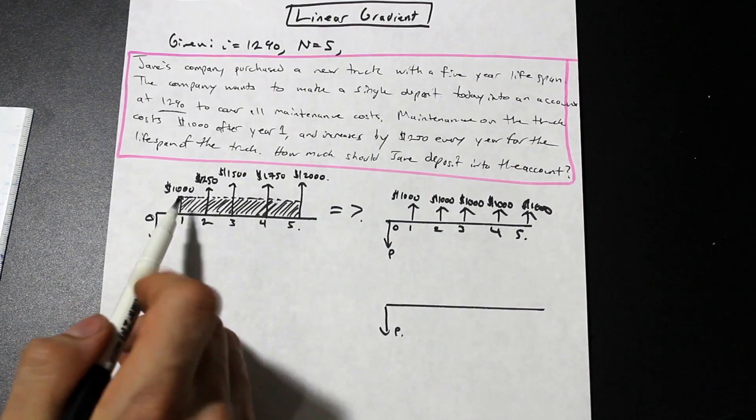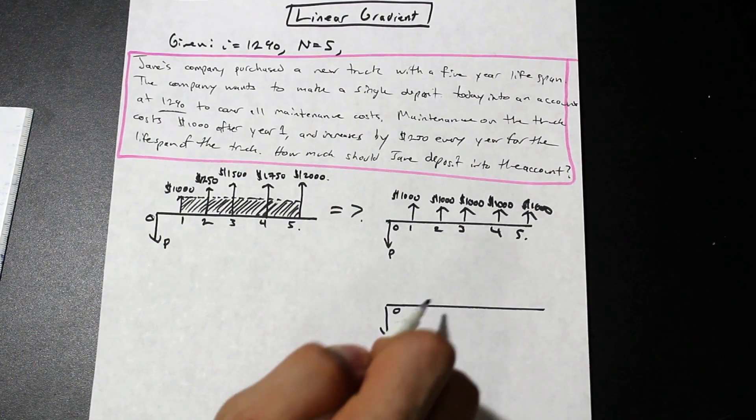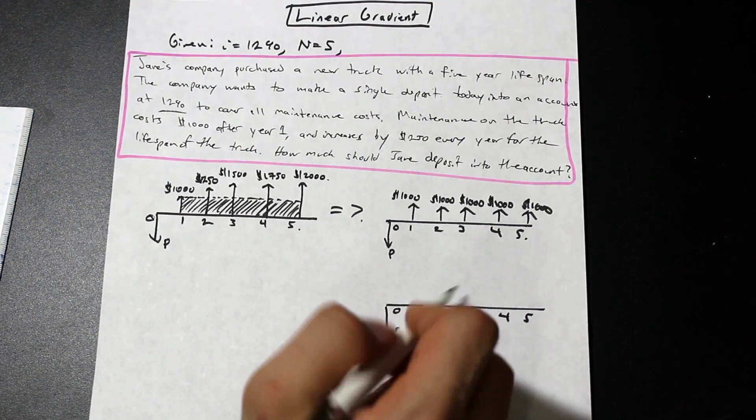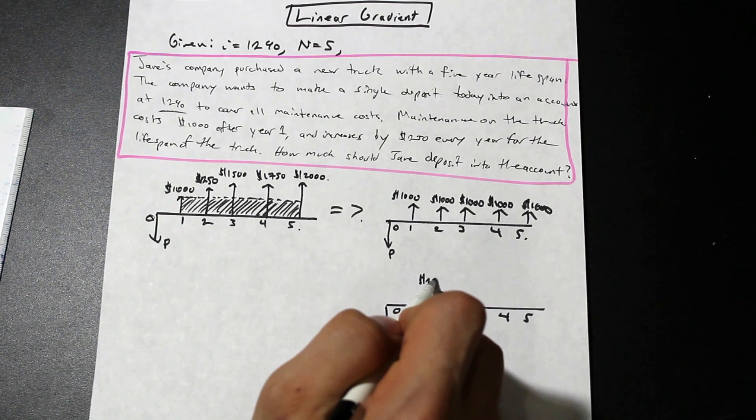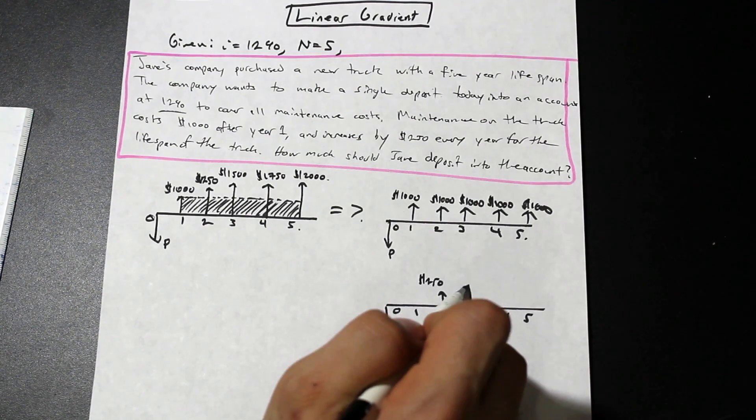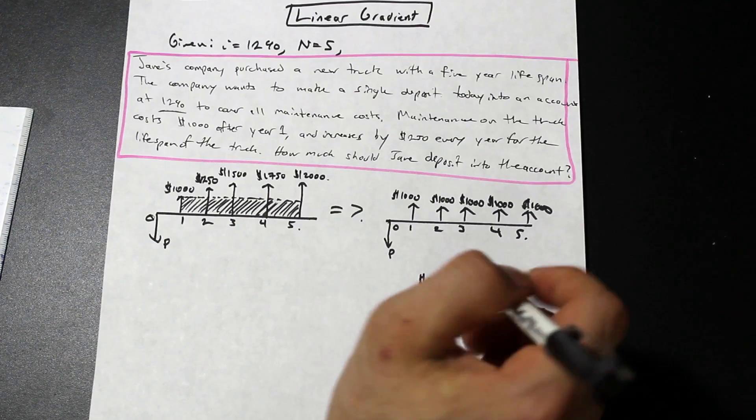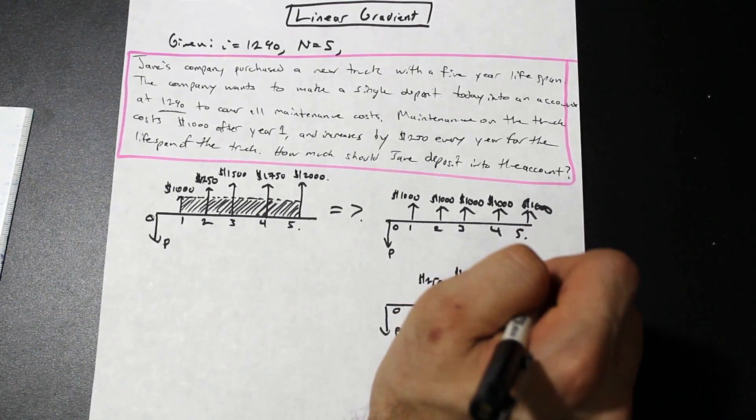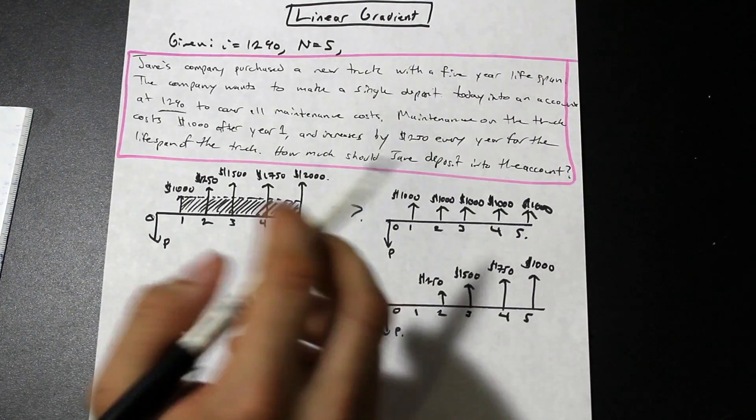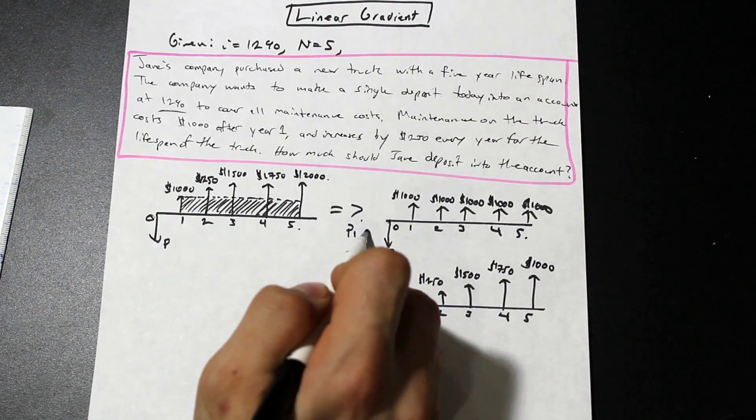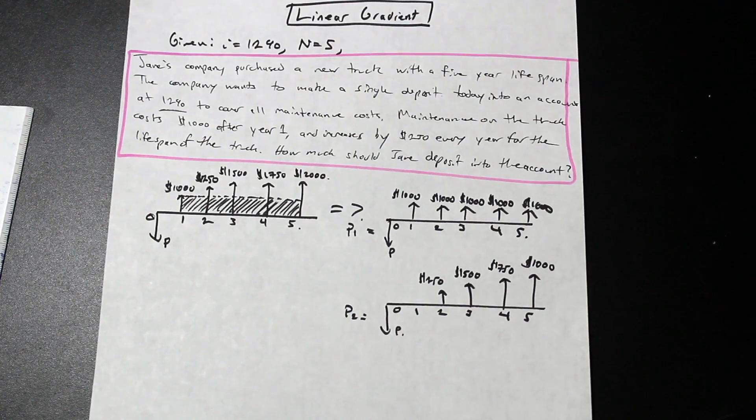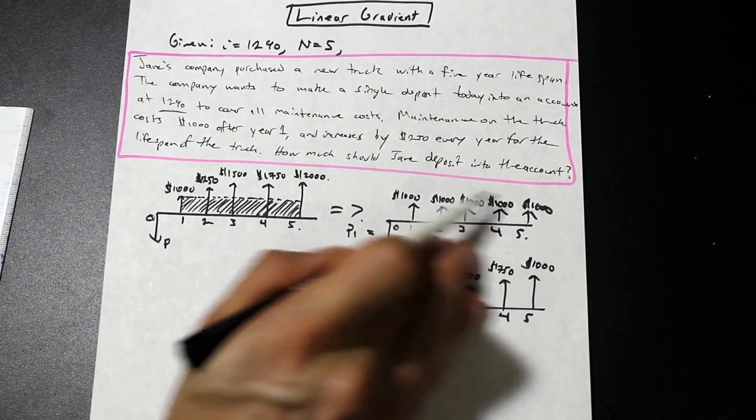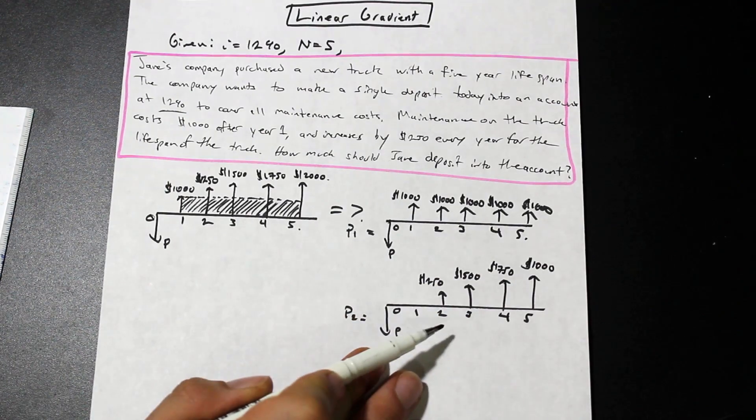So as you can see, we've taken the thousand out in year one, so it's zero in year one. Nothing happens. Year two, we're going to have, this is part of the gradient now. So this increase here that is linear is known as our linear gradient, so that's 500. So now what we've done is we've broken it down. We'll call this P1, and we'll call this P2. So what we've done is we've broken down this series of payments into an equal series payment and a linear gradient.